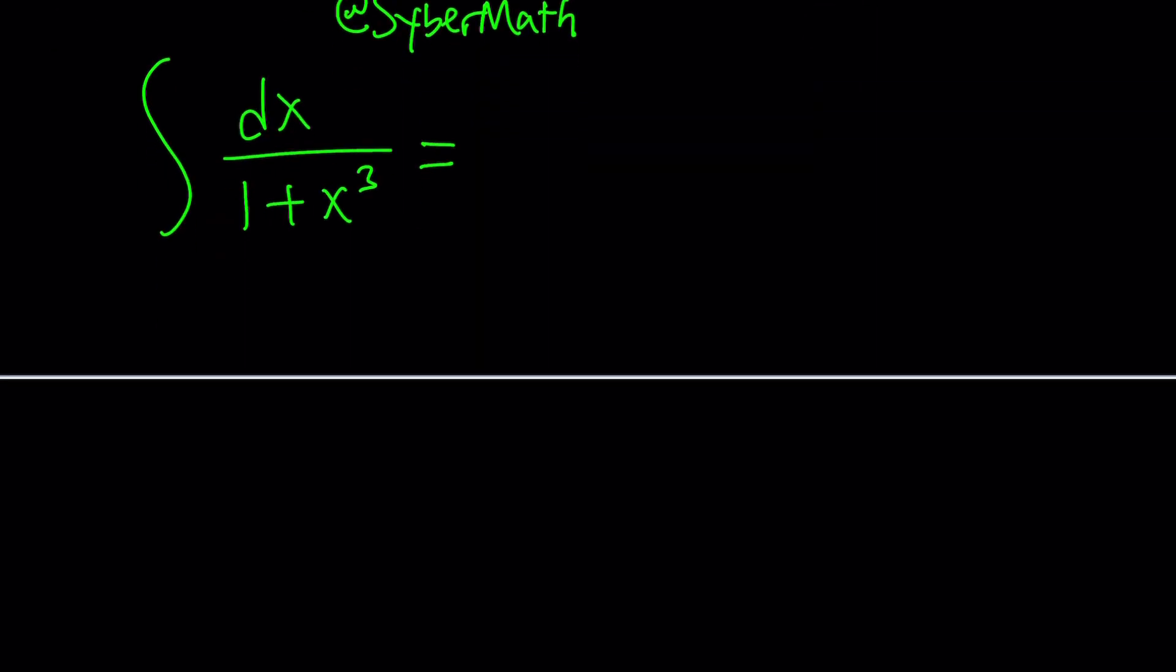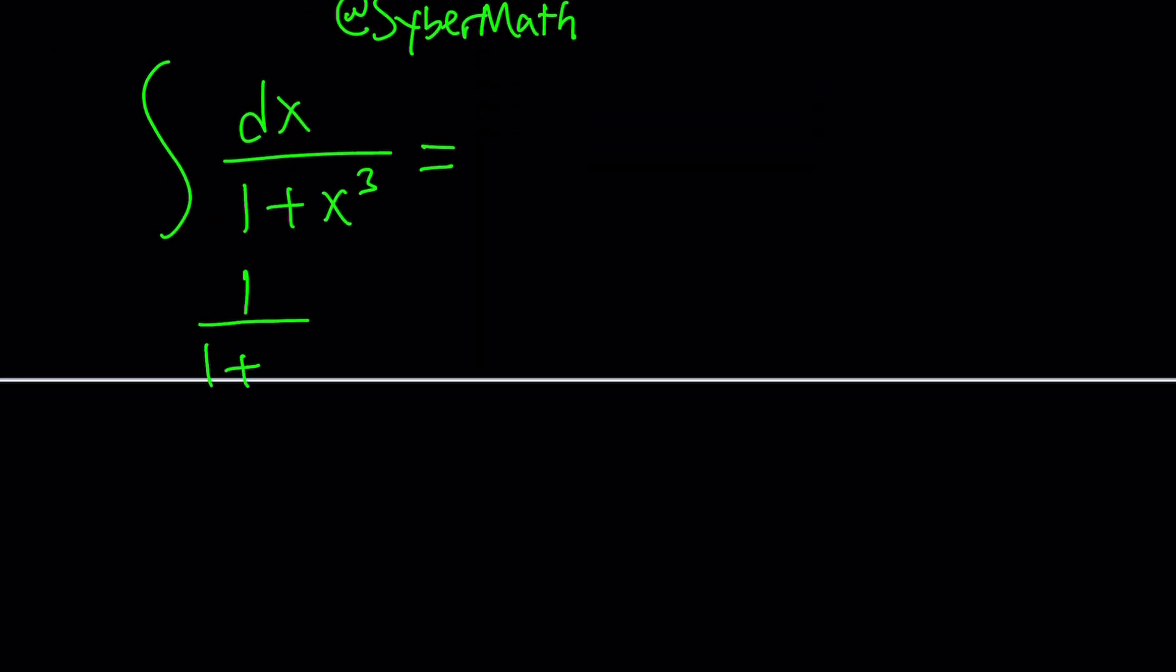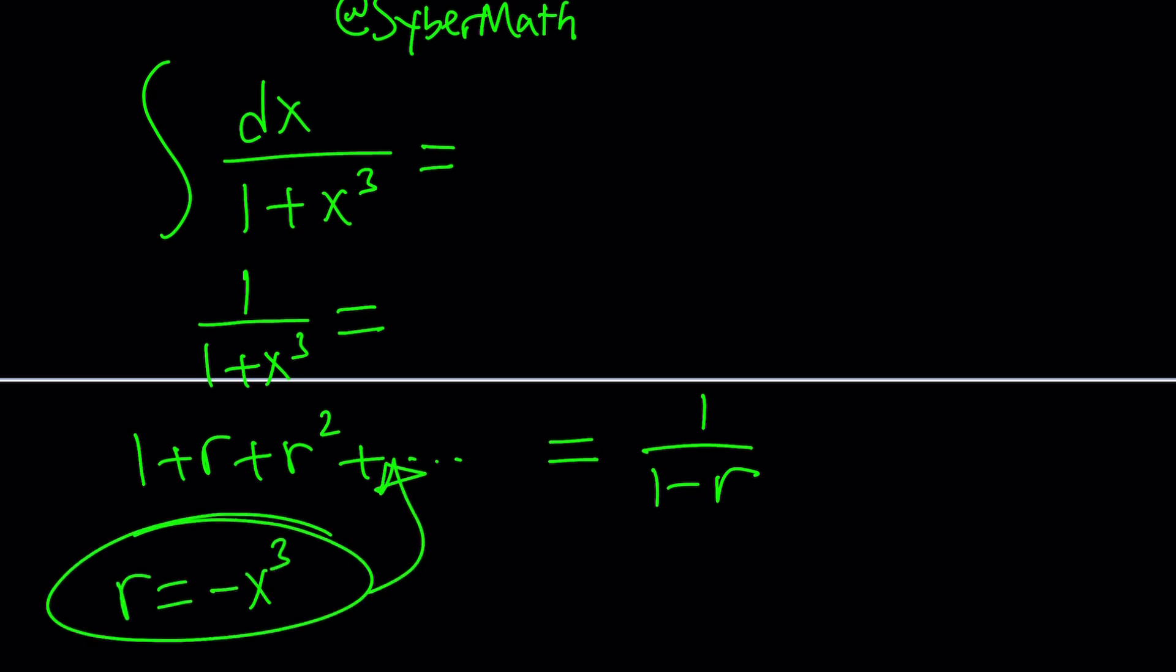So first of all, I want you to notice that 1 over 1 plus x cubed is actually the sum of an infinite geometric series. Why? Because if we have 1 plus r plus r squared all the way to infinity, this can be written as 1 over 1 minus r. And guess what happens if you replace r with negative x cubed? Yes, you get the sum on the left hand side, which is what we have. So the right hand side equals the left hand side. I don't know if that makes sense, but you're going to have to switch sides here.